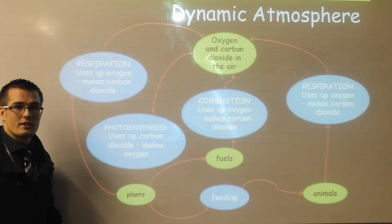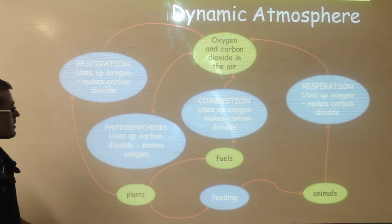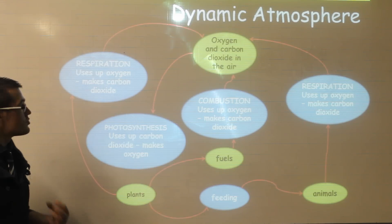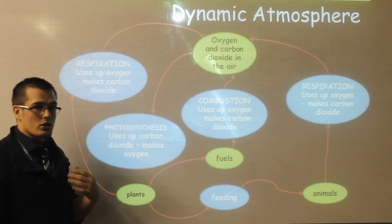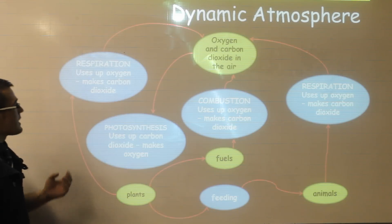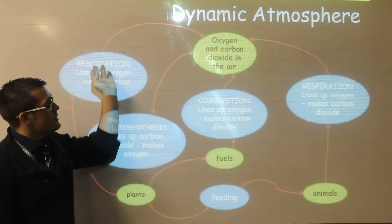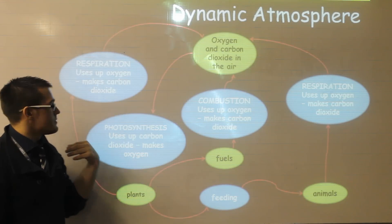Respiration is carried out by all living things and is a cellular process, very similar to combustion but because it's done on a cellular level it's a far more controlled reaction. In respiration, plants or animals will take glucose molecules and react it with oxygen and the products will be carbon dioxide and water. So that will increase the amount of carbon dioxide in the air but decrease the amount of oxygen.